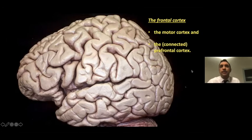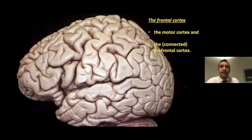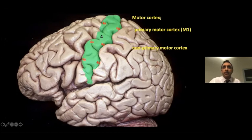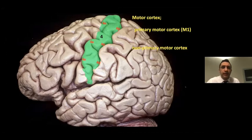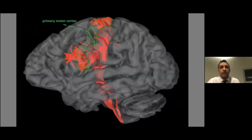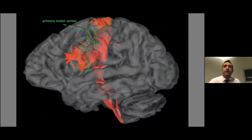On the lateral surface, the frontal cortex can be divided into two broad functional regions: the motor cortex and the prefrontal cortex. The motor cortex is further divided into primary and non-primary motor cortex. The primary motor cortex, also known as Brodmann area 4, is characterized by having long axons forming corticonuclear and corticospinal fibers, giving it a direct connection with the brainstem and spinal cord.